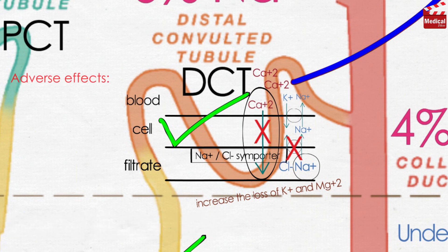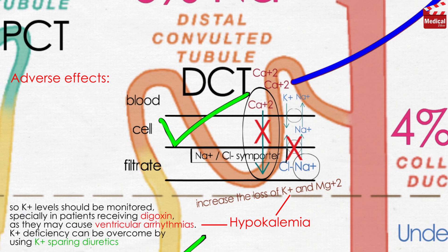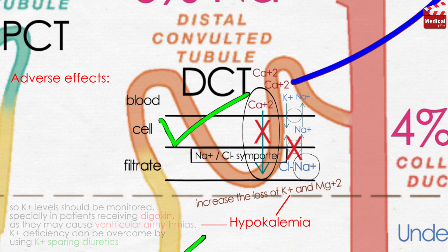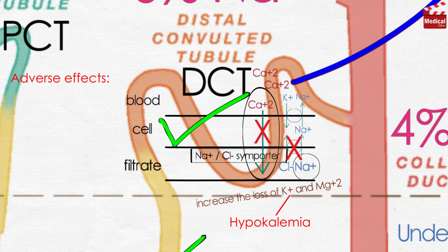Regarding adverse effects, the most frequent problem with thiazide diuretics is hypokalemia, so potassium levels should be monitored, especially in patients receiving digoxin, as they may cause ventricular arrhythmias. Potassium deficiency can be overcome by using potassium-sparing diuretics, which we'll discuss in the next lecture. Thiazides also cause hyponatremia and hypovolemia, which can cause orthostatic hypotension.